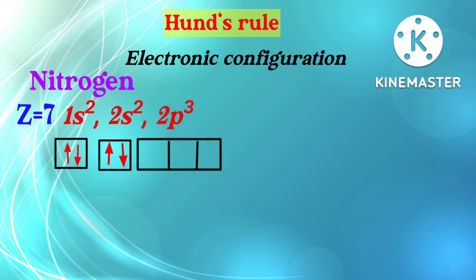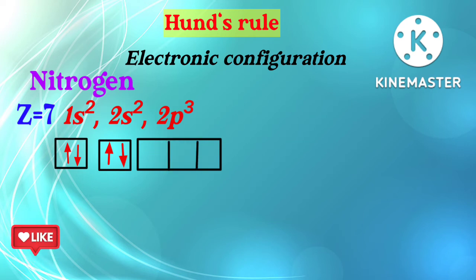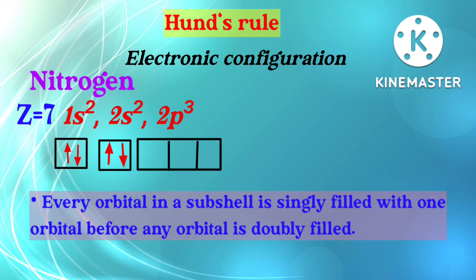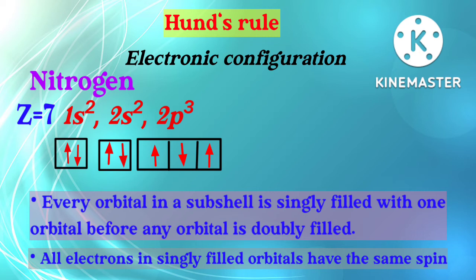Now the question is how to fill 3 electrons in the 2p orbital. For this we have Hund's Rule. Firstly, Hund's Rule states that every orbital in a subshell is singly filled before any orbital is doubly filled — meaning only one electron should be placed in each orbital of 2p. Secondly, Hund's Rule states that all electrons in singly filled orbitals have the same spin. So I place one electron in the upward direction in each of the three 2p orbitals. Now all electrons are singly filled and all electrons have the same spin.